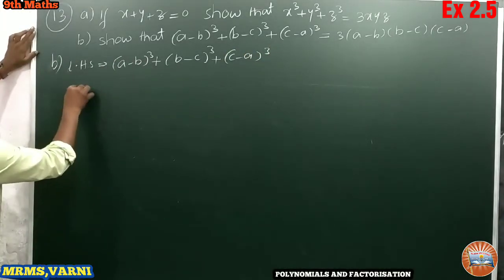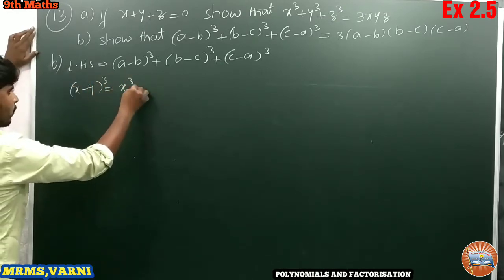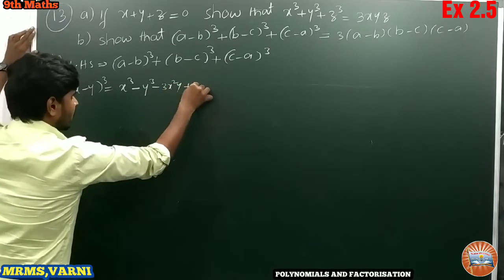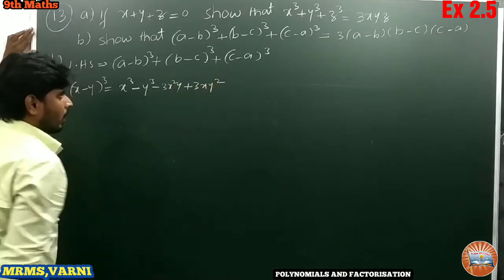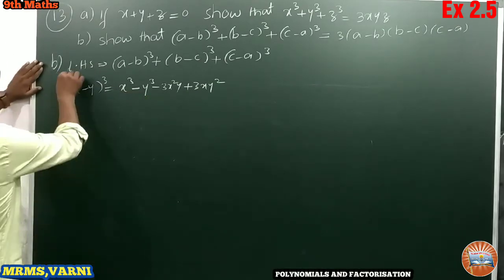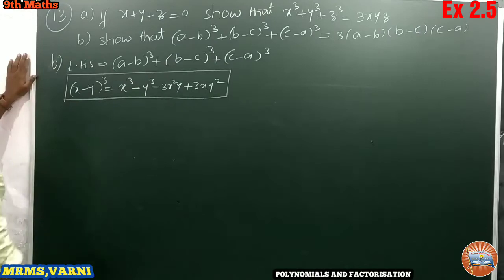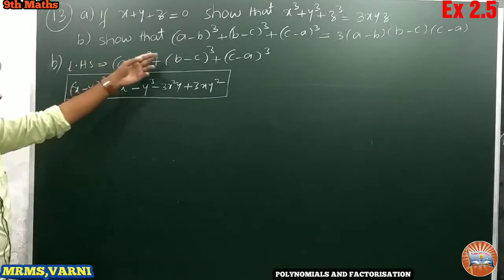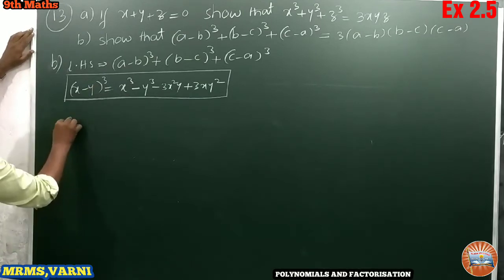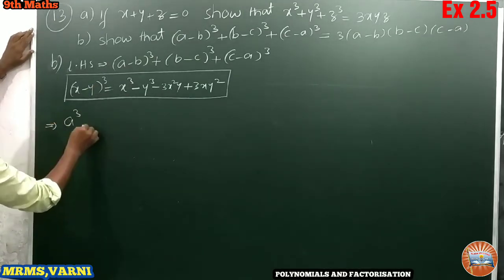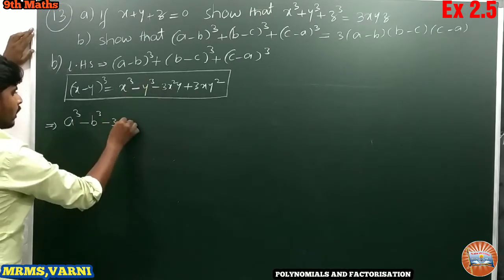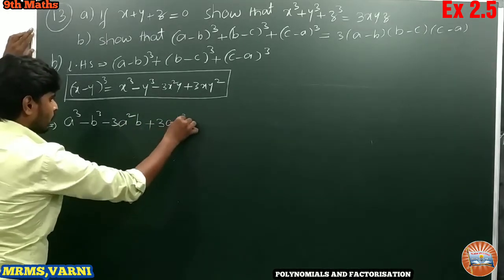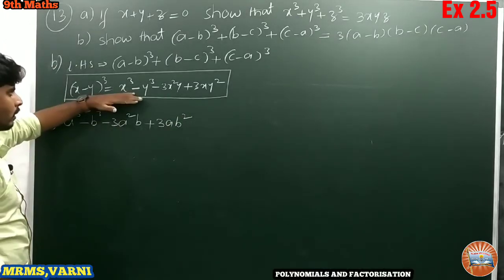We have the identity: x minus y all cube equals x cube minus y cube minus 3x squared y plus 3xy squared. This is the identity we have. With the use of this identity, I am applying it to these three terms.